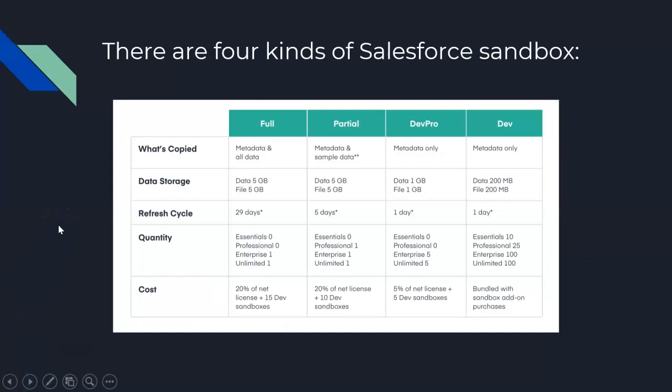There are four kinds of Salesforce sandbox: Full, Partial Copy, Dev Pro, and Dev. A Full sandbox copies metadata and all production data. A Partial Copy sandbox copies metadata and a sample of data. Dev Pro and Dev copy metadata only. Data storage for Full is up to 5 GB with 5 GB file storage; Partial is also 5 GB data and 5 GB file; Dev Pro is 1 GB data and 1 GB file.